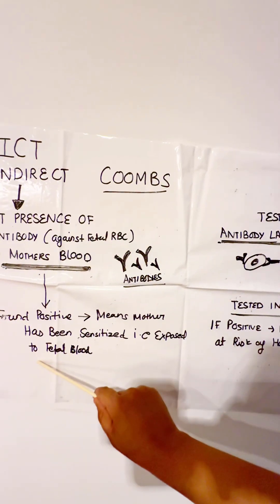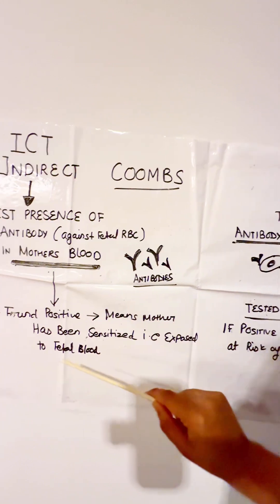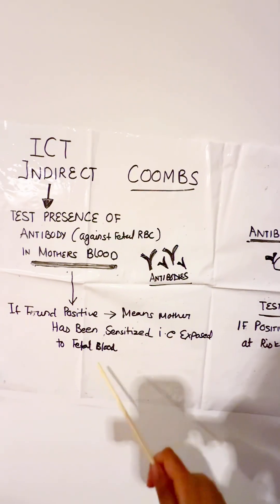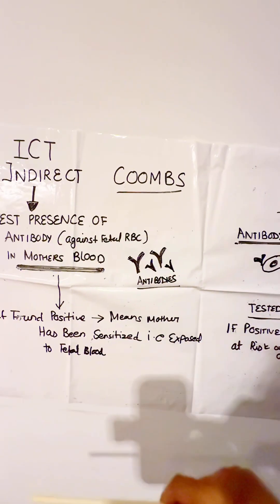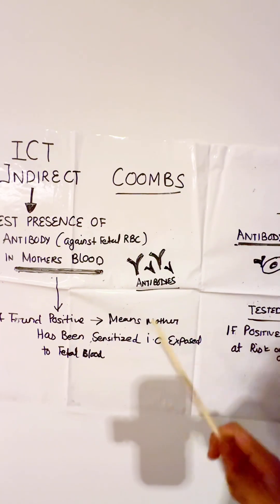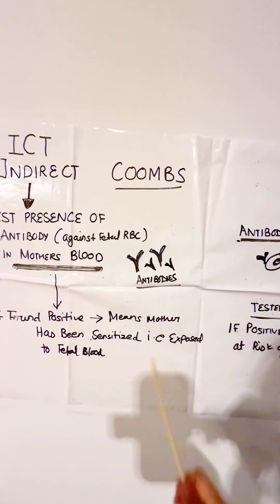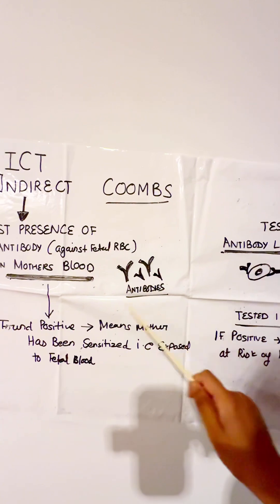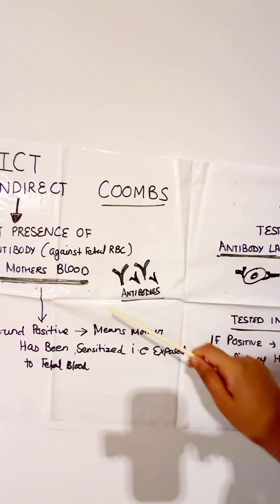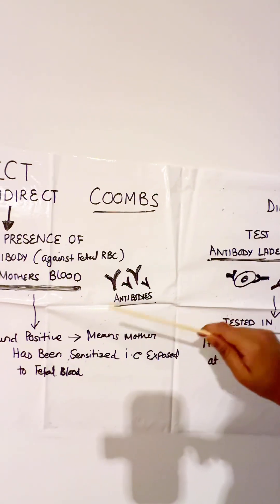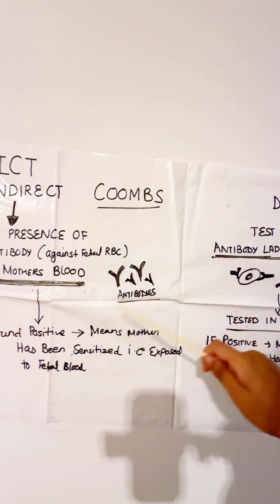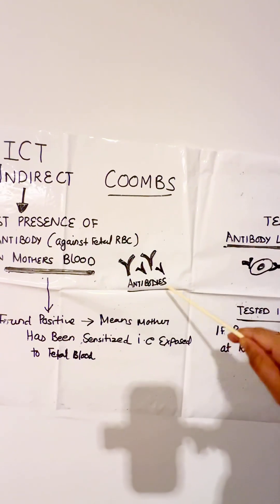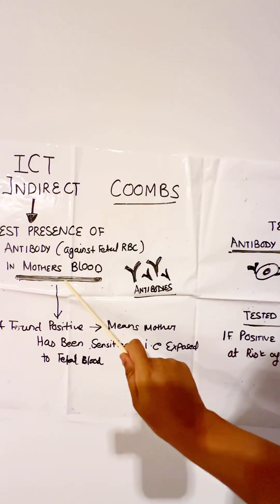Sensitized means she has been exposed to fetal blood. How can a mother be exposed to fetal blood? Through antepartum hemorrhage — whenever there is mixing of the mother's blood and fetal blood, the mother will develop antibodies against the RhD-positive blood of the baby.